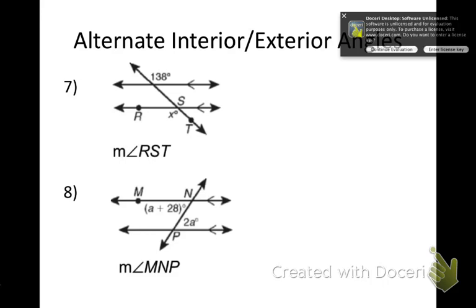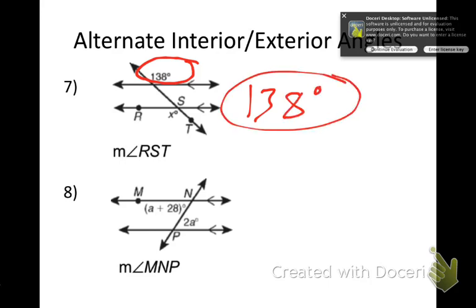Number 7: I need to find angle RST. I'm given 138°. That angle is also 138° — not because they're corresponding, but because those are alternate exterior angles, or AEA. They're on the outside and on different sides of the transversal, so they are congruent.